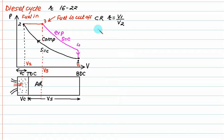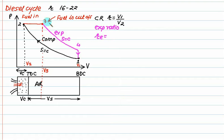We define another ratio called the expansion ratio, denoted re. As the name indicates, expansion must be greater than one, so re equals v4 divided by v3. The compression ratio and expansion ratio are entirely different ratios.